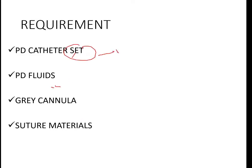Once these checks are done, the important requirements are: first, the CAPD catheter set — the Tenckhoff catheter set, which we will see in detail in the subsequent slide. Next is the PD fluid — two liters of PD fluid is required. Another important requirement is the gray cannula, which makes it easy to insert the guide wire.